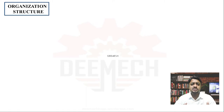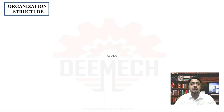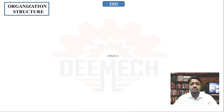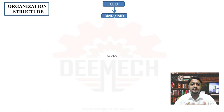Now let us look at a simple organization structure to understand the basic operation process and the role of staff. At the top we have the CEO of the organization, who has started the business. Next comes the board of directors, or it could be a single person — a managing director.